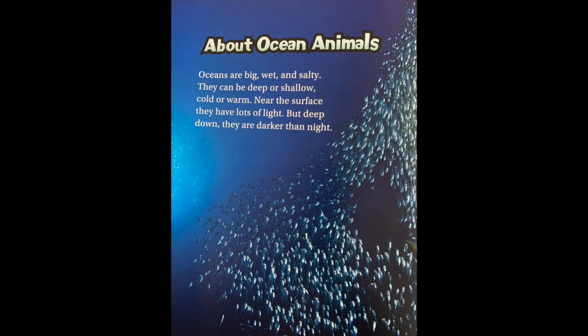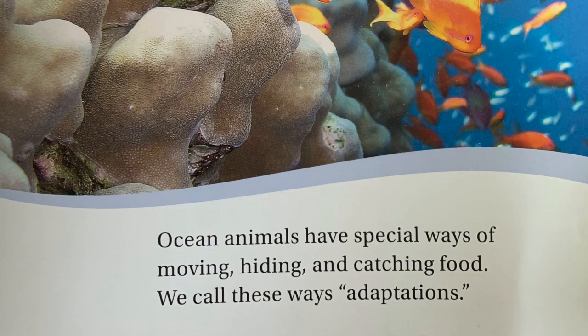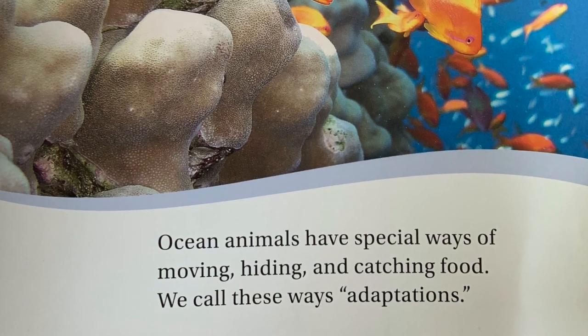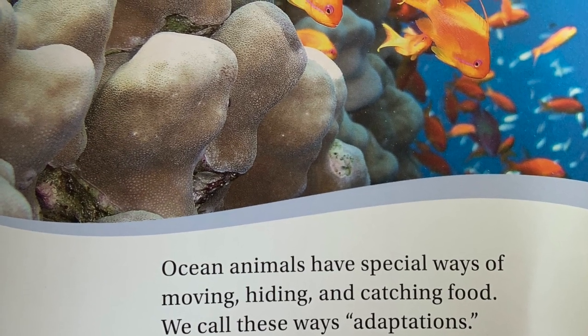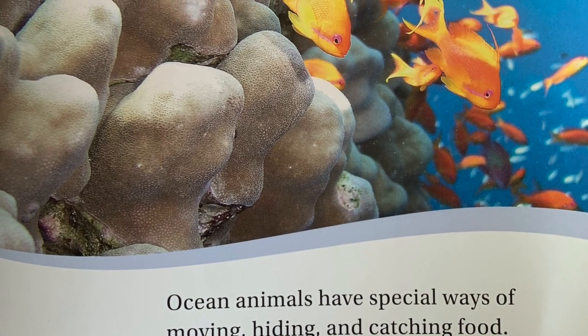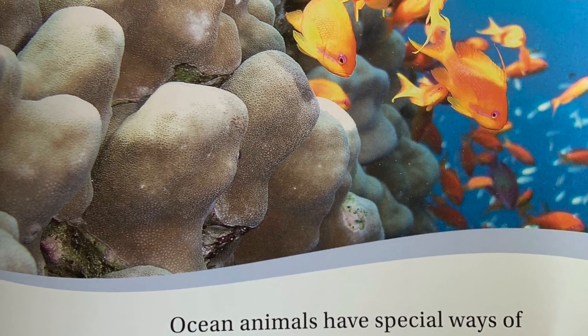Oceans are big, wet, and salty. They can be deep or shallow, cold, or warm. Near the surface they have lots of light, but deep down they are darker than night. Ocean animals have special ways of moving, hiding, and catching food. We call these ways adaptations.